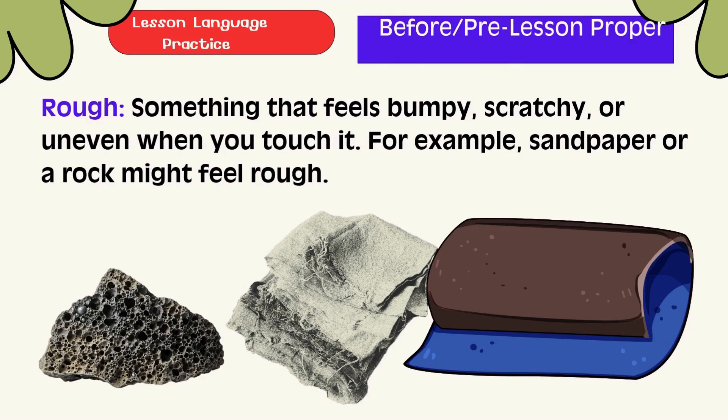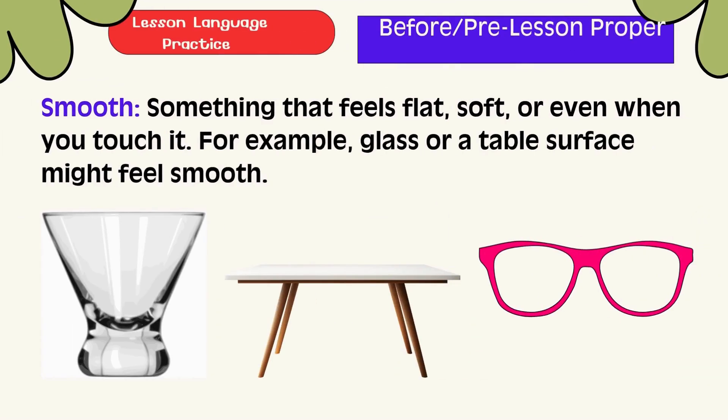Rough: something that feels bumpy, scratchy, or uneven when you touch it. For example, sandpaper or a rock might feel rough. Smooth: something that feels flat, soft, or even when you touch it. For example, glass or a table's surface might feel smooth.